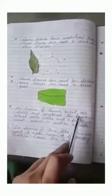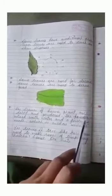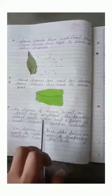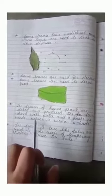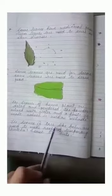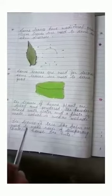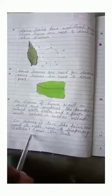Leaves of henna plant are dried and powdered. The powder is mixed with water to make paste which is used as mehendi. The leaves of trees like palm are used to make roofs of temporary houses like kacha house or huts. Leaves help to keep the air clean by giving out oxygen.